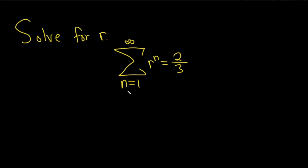In this problem, we have an equation involving an infinite sum, and we're being asked to solve for r. So we have the sum from 1 to infinity of r to the n, and we're told it's equal to 2 thirds, and we have to find r.